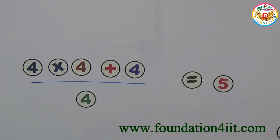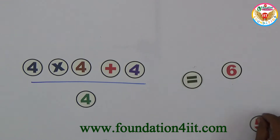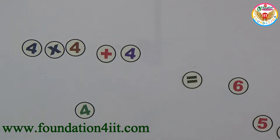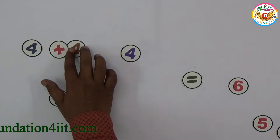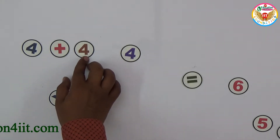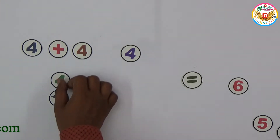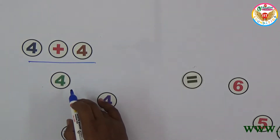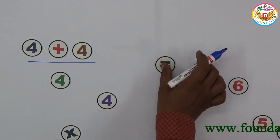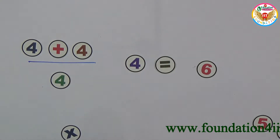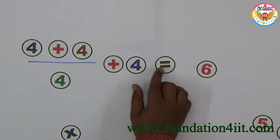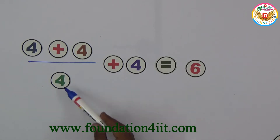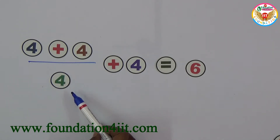To make equal to 6 using the four fours: 4 plus 4 is 8, divided by 4 is 2, then plus 4 gives 6. So (4 + 4) / 4 + 4 = 6.